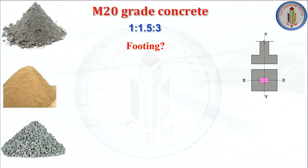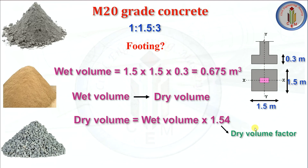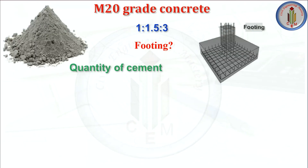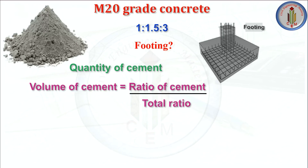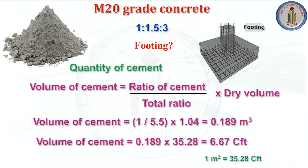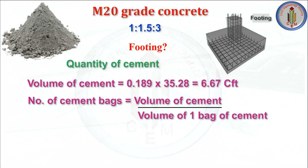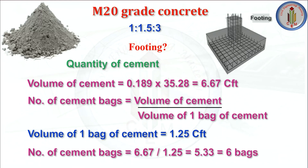Finally, let us calculate for footing. This is the plan and section of the footing. Length is 1.5 meter, width is 1.5 meter and depth is 0.3 meter. The wet volume is 0.675 meter cube, and converting to dry volume gives 1.04 meter cube. Volume of cement equals ratio of cement by total ratio multiplied by dry volume — giving 0.189 meter cube, which is 6.67 CFT — that is 6 bags of cement.